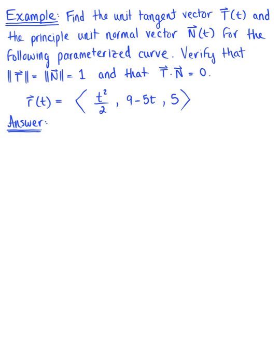Find the unit tangent vector and the principal unit normal vector for the following parametrized curve. We're then asked to verify that the magnitude of the unit tangent vector equals the magnitude of the principal unit normal vector — verifying that these are both unit vectors with length 1. We also need to verify that these two vectors are orthogonal by checking that their dot product equals 0.